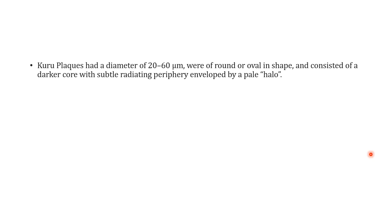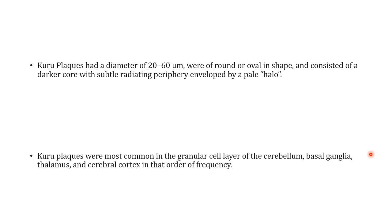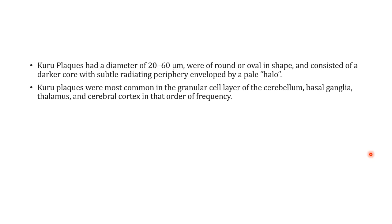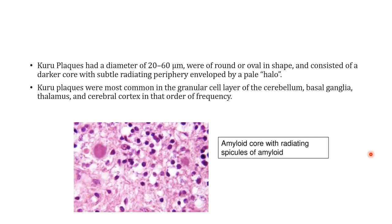Kuru plaques have a diameter of about 20 to 60 micrometres and appear round or oval in shape with a darker core and subtle radiating periphery enveloped by a pale halo. Kuru plaques are more common in the granular cell layer of the cerebellum. As seen in the figure, this is the amyloid or Kuru plaque with characteristic radiating spicules of amyloid — absolutely characteristic of Kuru.